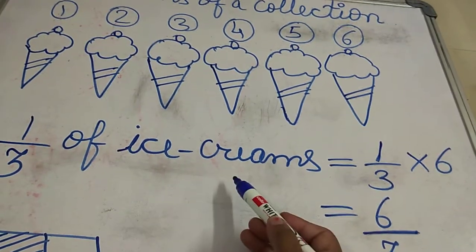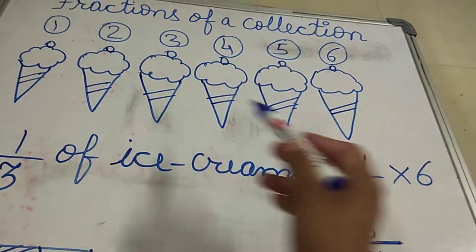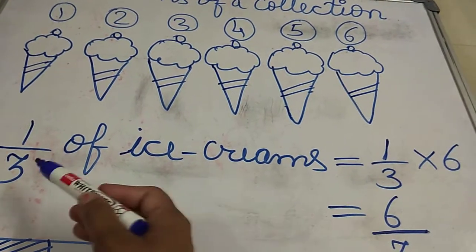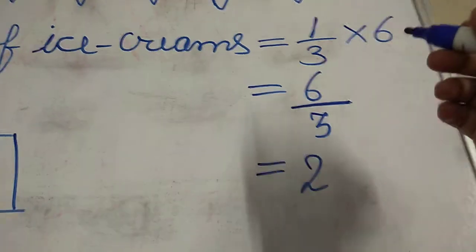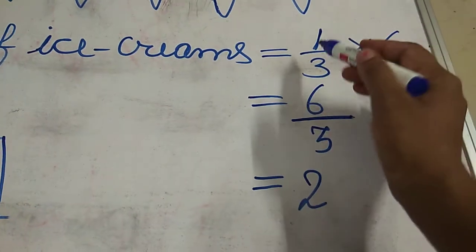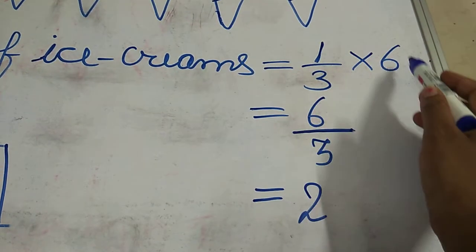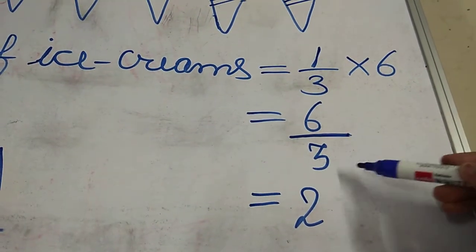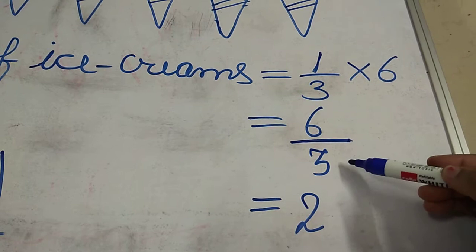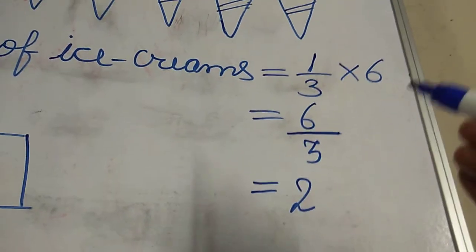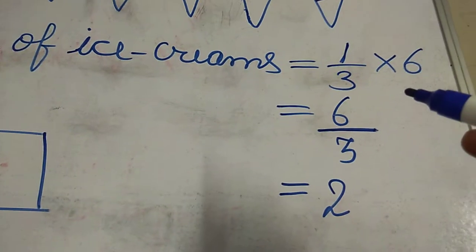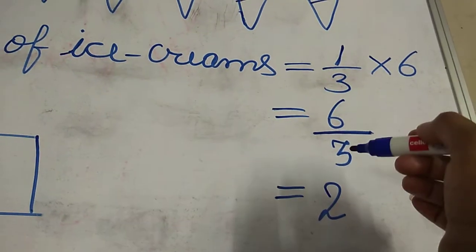Ice creams, in place of ice creams we will write the number of ice creams we have, and one third. So now one third, if I multiply numerator by numerator, six ones are six, and in the denominator three is there, six by three. And friends, we know that fraction is the form of division also.